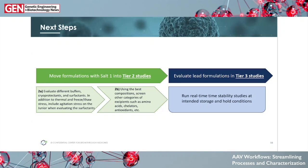By putting all this data together, we see that we want to move formulations forward with salt 1 alone, sticking with formulations around pH 7 and 8 while still evaluating different buffers, cryoprotectants, and surfactants in our next tier — tier 2A. Since we're going to look at surfactants, we'll also include agitation stress on Junior. From there, tier 2B uses the best compositions to screen other categories of excipients such as amino acids, chelators, antioxidants, etc., to arrive at lead formulation compositions and then determine final formulation selection with real-time stability data for shelf life at the intended storage temperature.